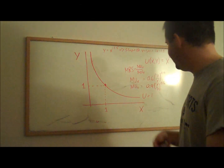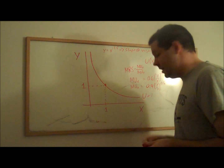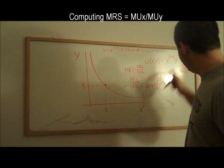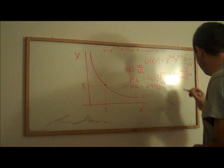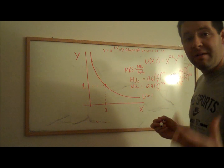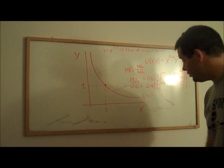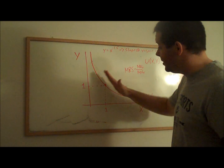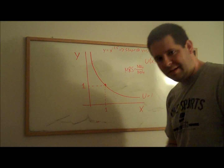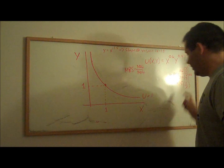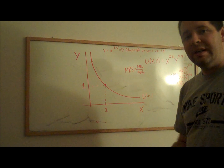Now we've figured out the marginal utility of x and the marginal utility of y, and we can take their ratio to get the slope of the indifference curve at any point in the plane — not just on the u equals 1 indifference curve. Putting MU_x in the numerator and MU_y in the denominator, we simplify 0.6 over 0.4 to 1.5, and after inverting and multiplying, we get that the marginal rate of substitution equals 1.5 times y over x.